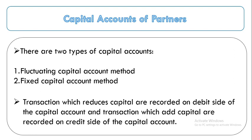Transactions which reduce capital are recorded on the debit side of the capital account, and transactions which add capital are recorded on the credit side. Remember: when capital increases it comes on the credit side, and when capital decreases it comes on the debit side.